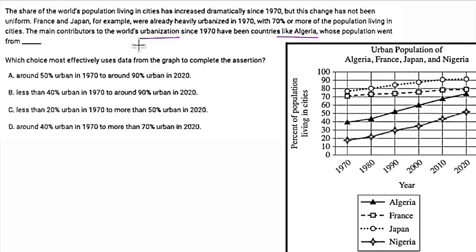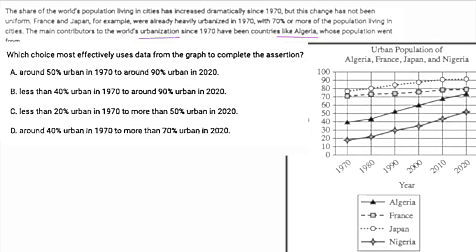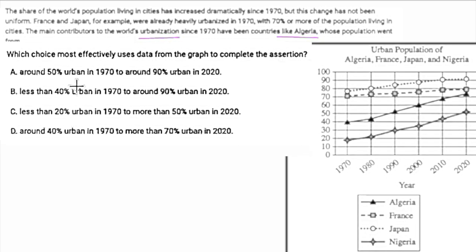Let's go through and eliminate anything that doesn't support that idea. Around 50% urban in 1970 to 90% urban in 2020 — that seems like a pretty big jump, so that sounds good. Less than 40% urban in 1970 to around 90% urban in 2020 — so that's even better. I can tell one of those is not going to be true. We also have: less than 20% urban in 1970 and more than 50% urban in 2020, and around 40% urban in 1970 to more than 70% urban in 2020.